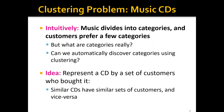Let's say, for example, we have a lot of music CDs, and intuitively music can be divided into categories. Customers may prefer a few of these categories, but what are the categories really? Can we automatically discover these categories using clustering? One idea is that we can represent a CD by a set of customers who bought it. Naturally, similar CDs will have similar sets of customers and vice versa.